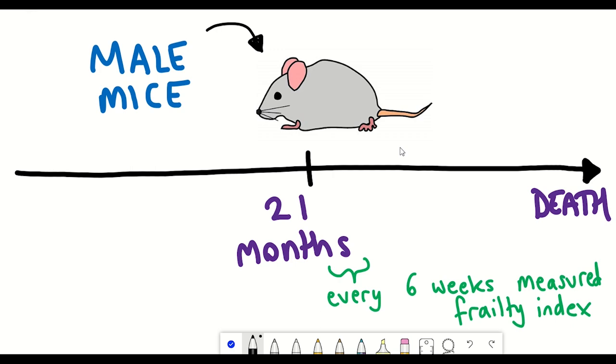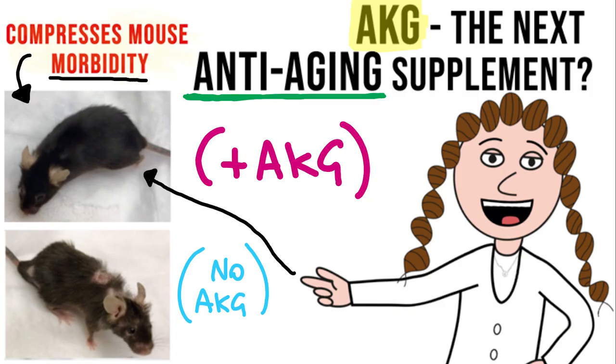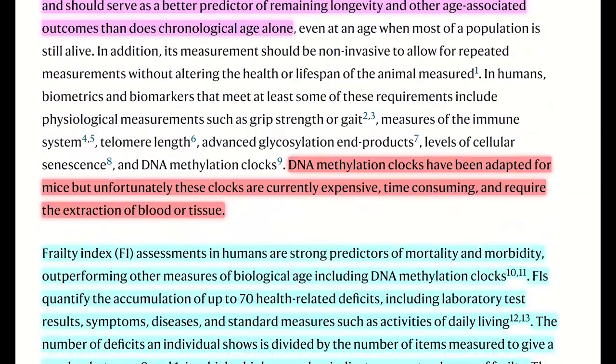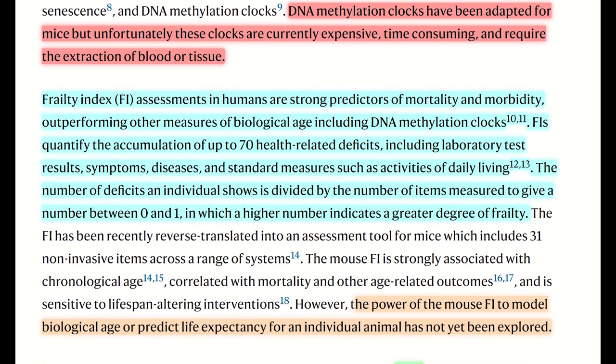So for my attentive viewers, you may recall that I mentioned the frailty index when I mentioned alpha-ketoglutarate in a previous video. But to recap, the frailty index is an assessment that includes and quantifies the accumulation of up to 70 different health-related deficits, including laboratory test results, symptoms, diseases, and standard measures such as activities of daily living.